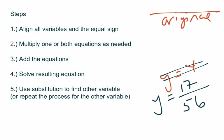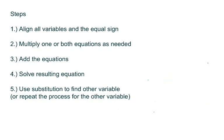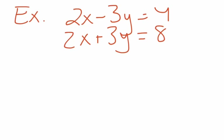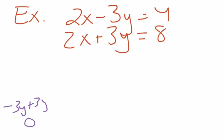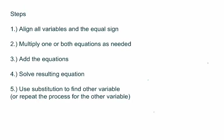Now step two — this is the step where things tend to not go well for students because you have to think. Here's the goal: when I add them, I want one of the variables to drop out. If I add two X plus two X, I get four X. Negative three Y plus three Y would give me zero, so the Y would be eliminated. This is one of those examples where no multiplication is needed — it's ready-made.